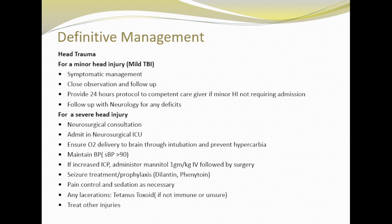For a minor head injury such as traumatic brain injury or concussion, provide symptomatic management and advice for close observation and follow-up. Provide a 24-hour head injury protocol to a competent caregiver if the minor head injury does not require admission. Advise patients to follow up with neurology for any deficits, because even a seemingly minor head injury can cause long-lasting deficits. Give early neurosurgical consultation for acute and subsequent patient management, and admit to neurosurgical ICU if there is severe head injury. If there are signs of increased intracranial pressure, administer mannitol 1.5 mg/kg IV followed by surgery. Provide seizure treatment or prophylaxis, and provide pain control and sedation if necessary.